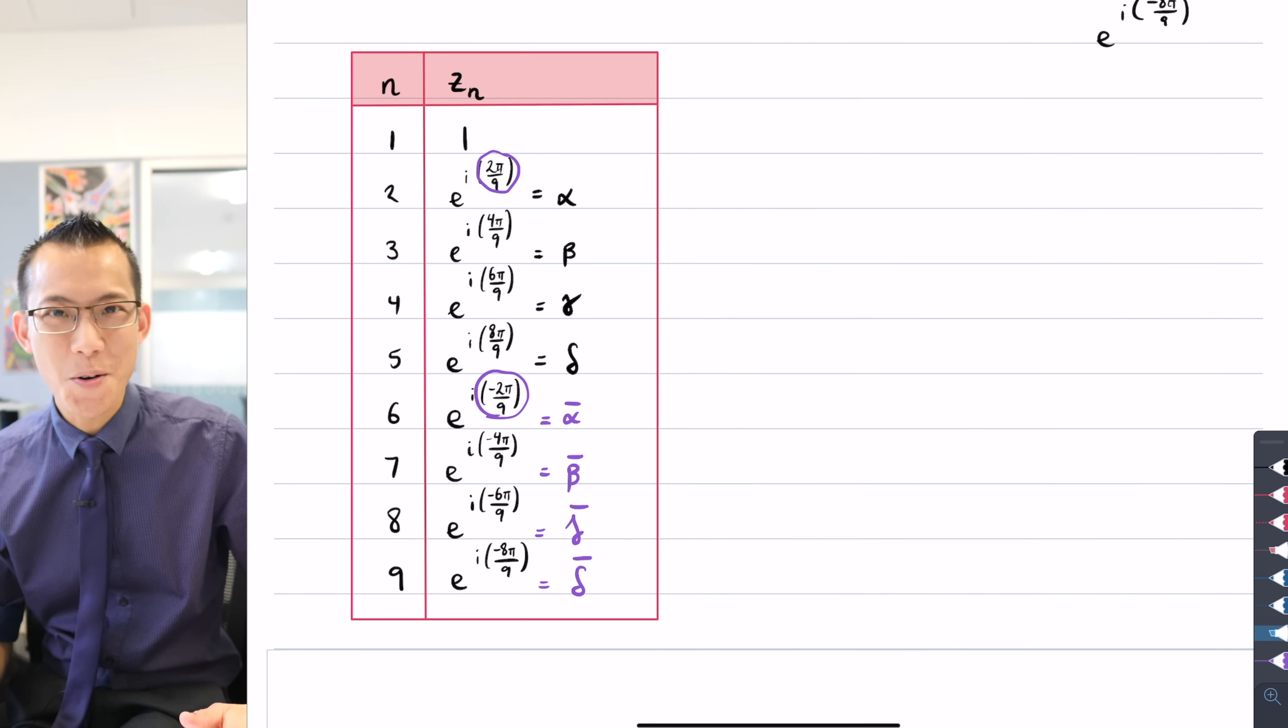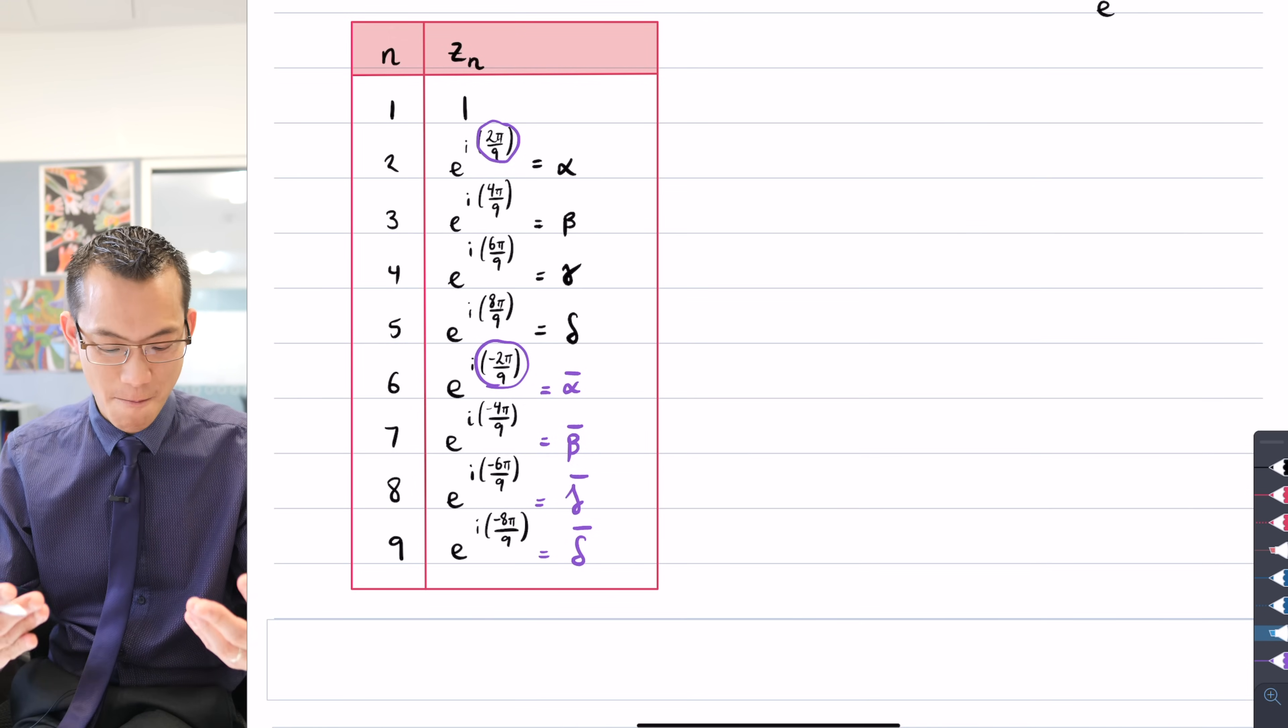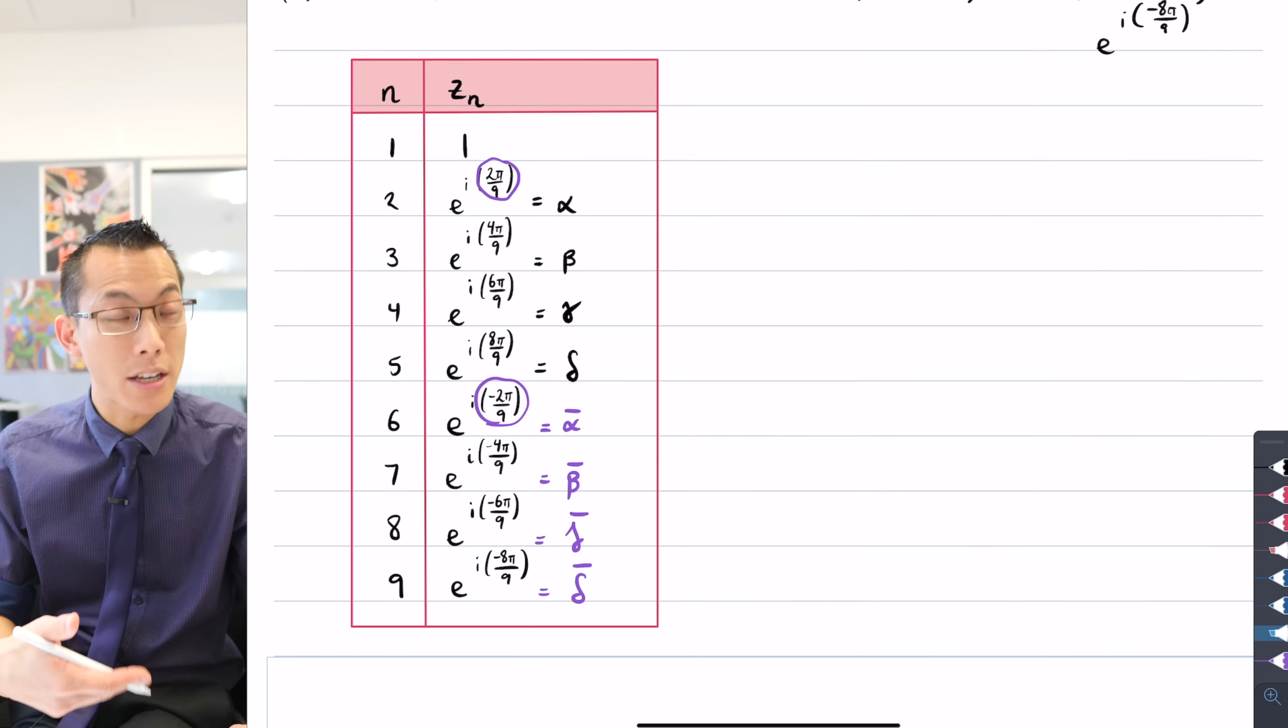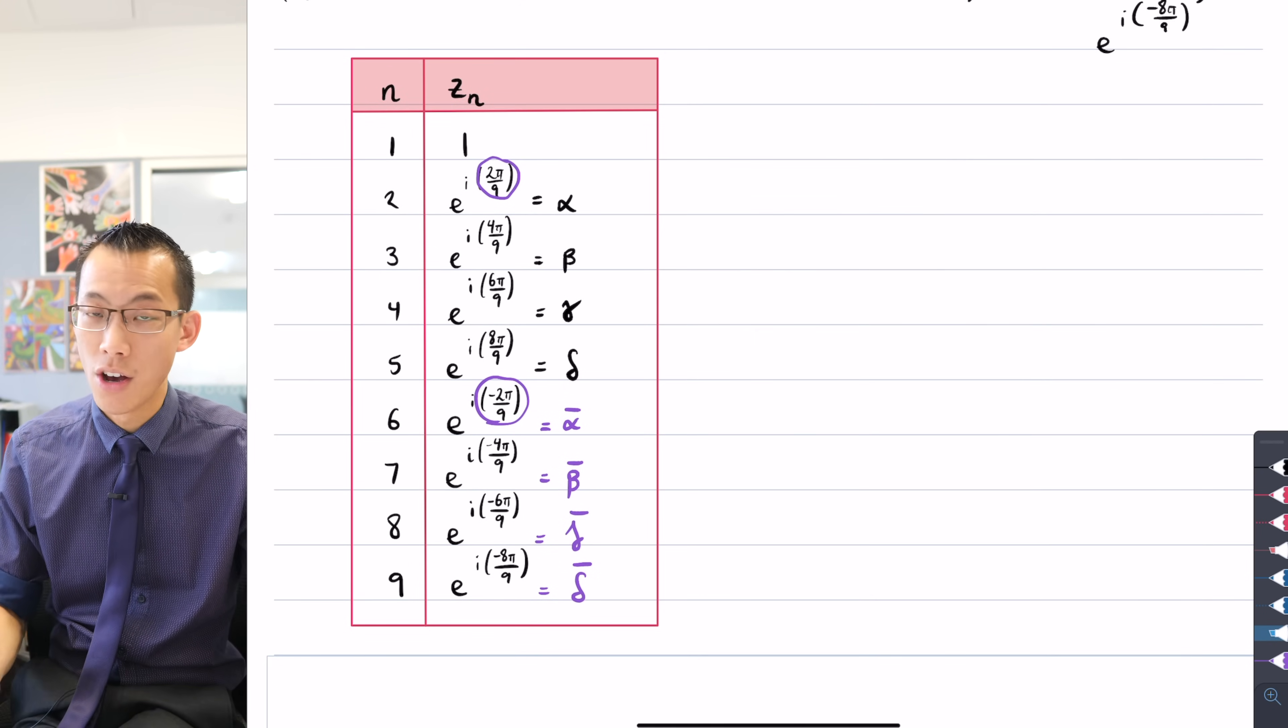So this is what we get out of the fact that, as I've talked about before, this thing called the complex conjugate root theorem, when you have a polynomial, like for example, z^9 - 1 = 0, that's the polynomial that gives us these nine solutions.